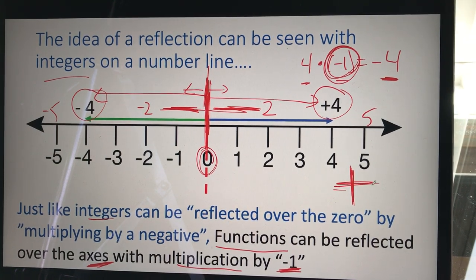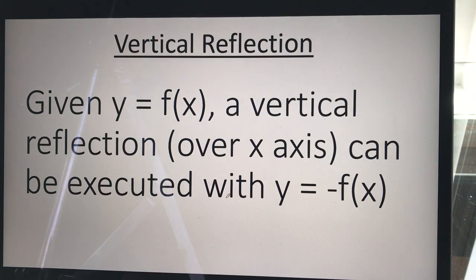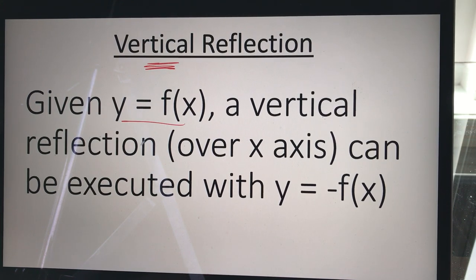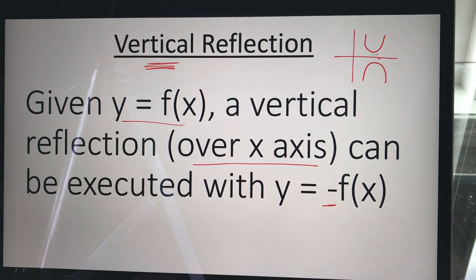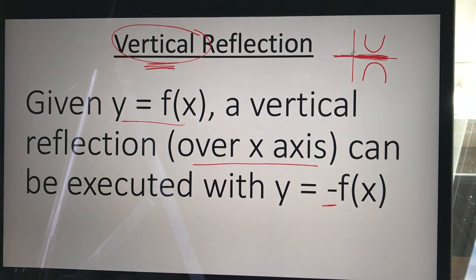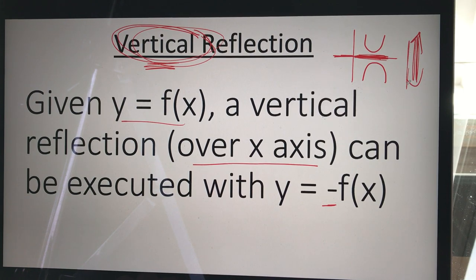There are two kinds of reflections for us: vertical and horizontal. For a vertical reflection, given any function y = f(x), a vertical reflection over the x-axis can be executed by multiplying the function by negative one. So if our function looks like this and I multiply it by negative one, it reflects over the x-axis. It's a vertical reflection — it's reflecting vertically up and down.